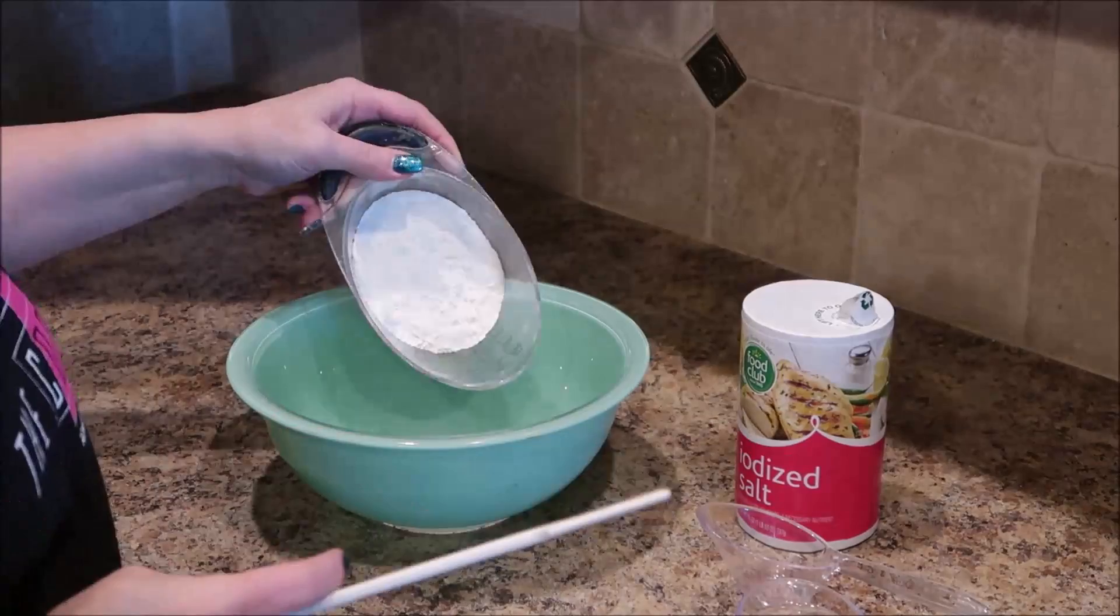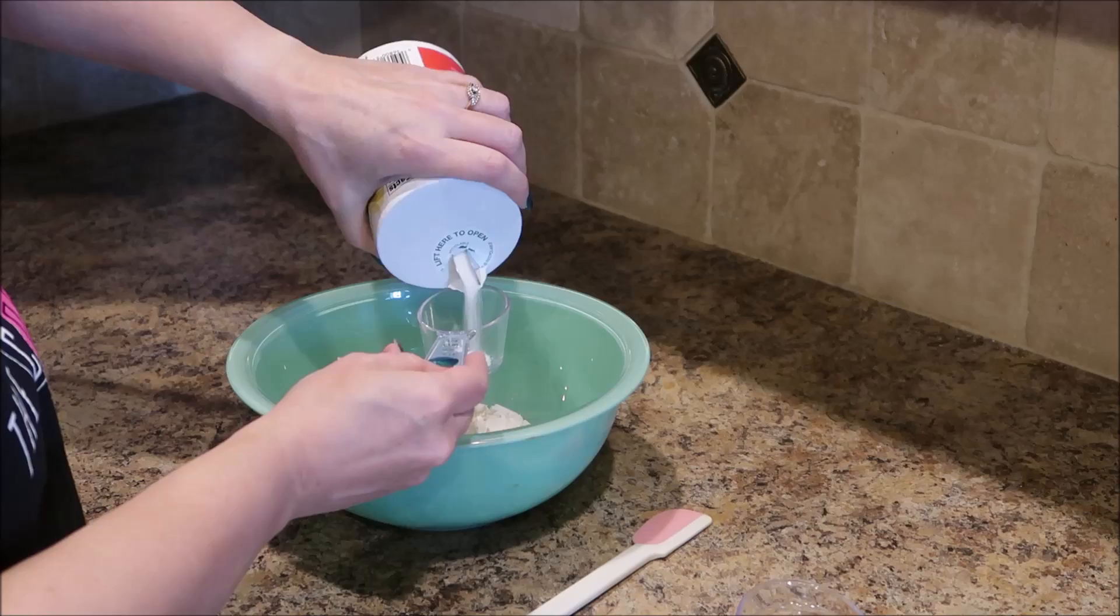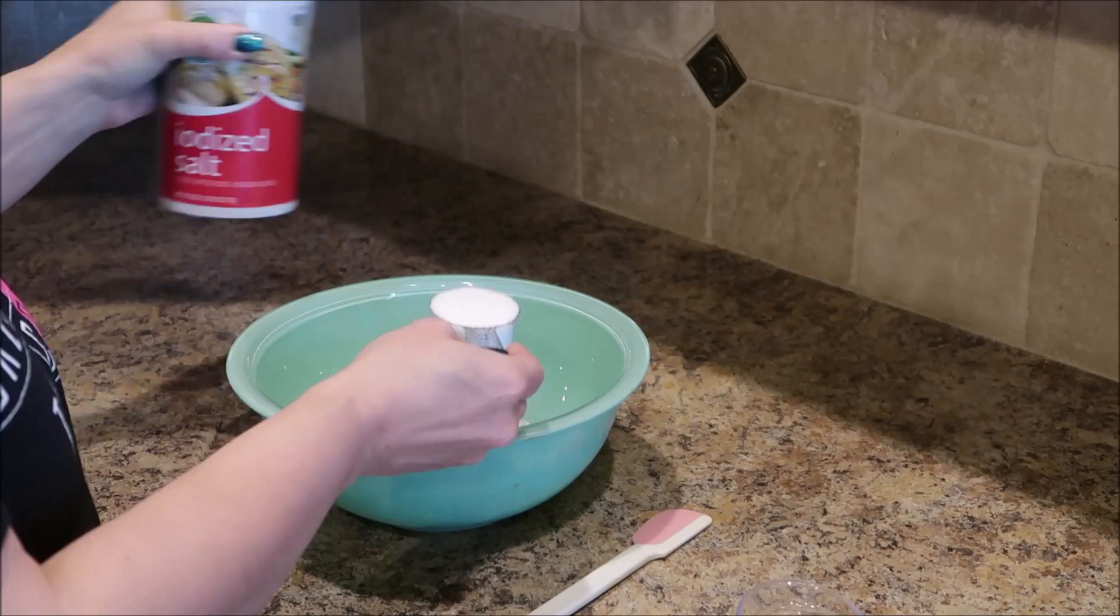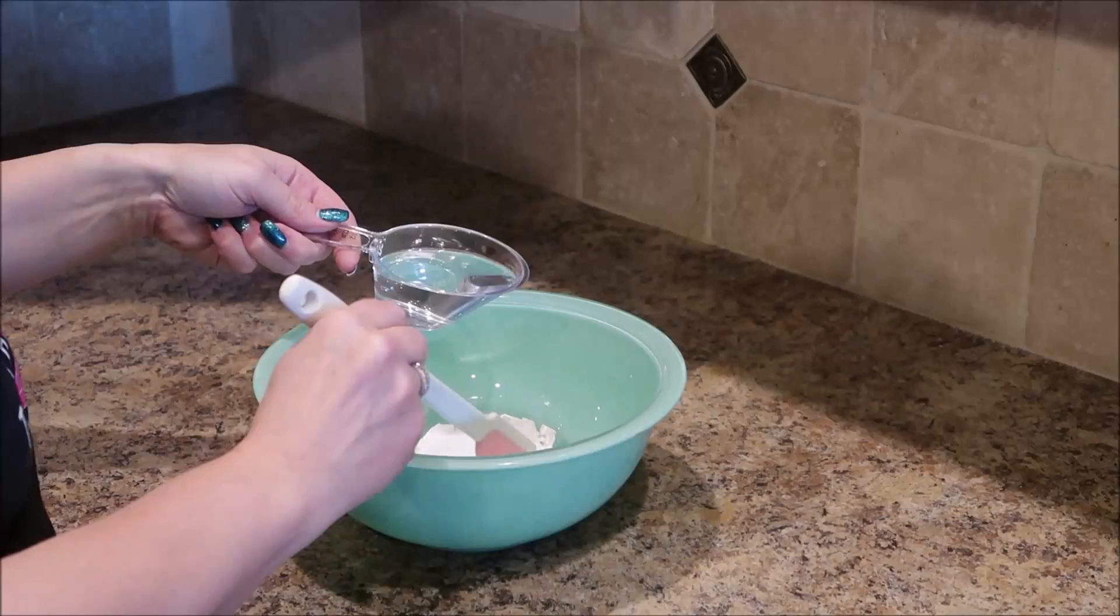I started out with a basic salt dough recipe, which is two cups flour, one cup salt, and one cup water, give or take a little bit. I actually am just making a half of a recipe here because I didn't need a full recipe. You just mix your salt and flour together and then add your water and mix it until you have a soft dough that's nice and pliable.